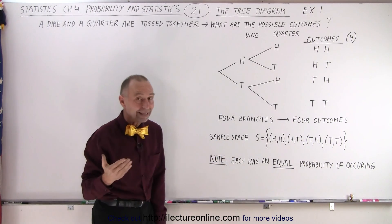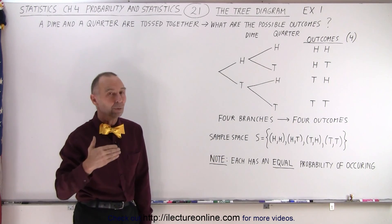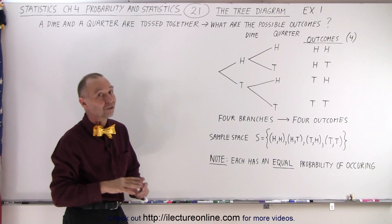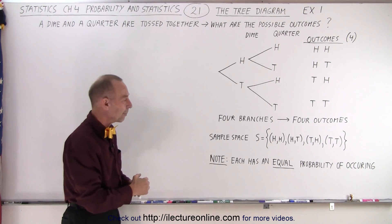And notice that in this case, each of the four outcomes has an equal probability of occurrence. That is not always the case, and we'll see some examples of that later.